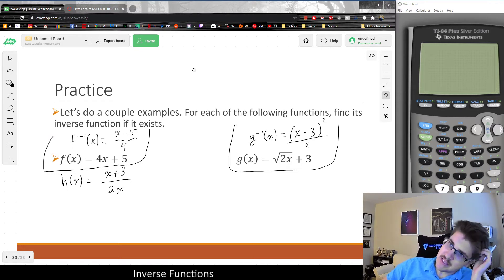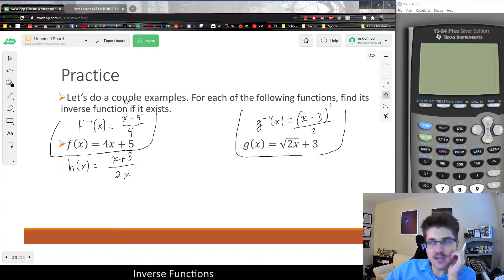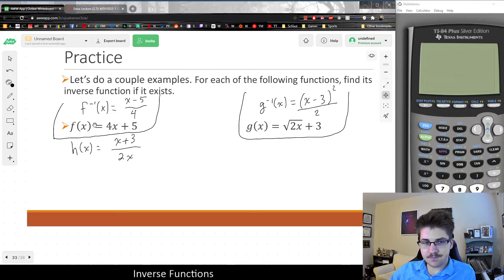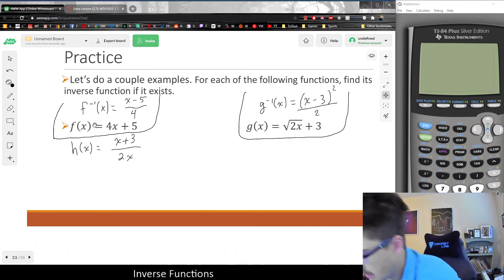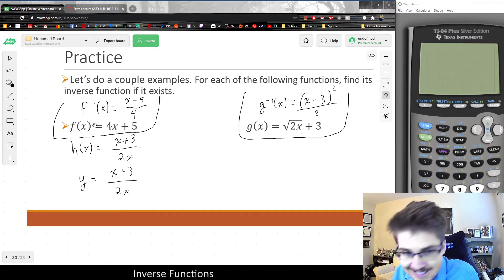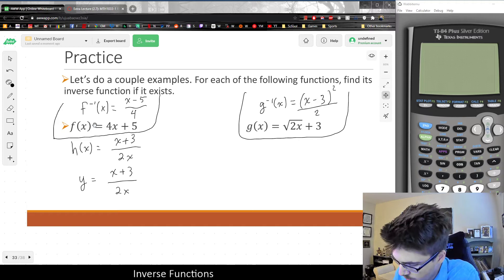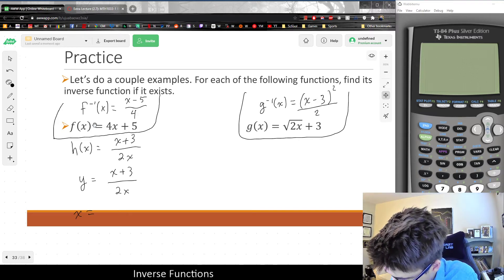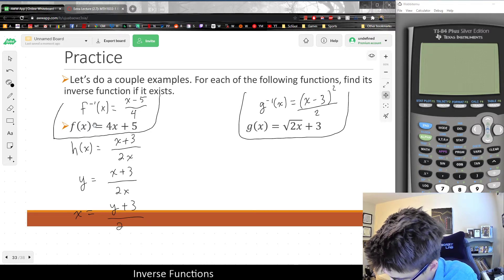So today we looked at a couple inverse functions, these ones we did in class today, but I wanted to do one much like number 6. So let's say our function h(x) is equal to (x+3)/(2x). Since we always start by switching h(x) to y and swapping h(x) with y as is the step-by-step for solving and finding an inverse function. So if we interchange y with x, that would leave us with x = (y+3)/(2y).